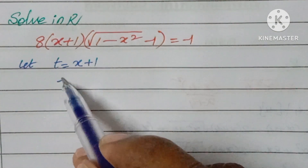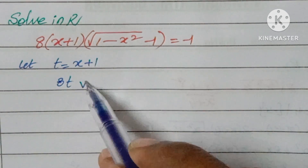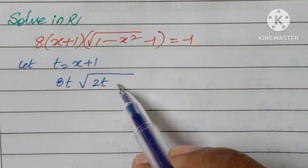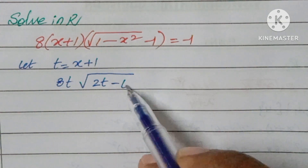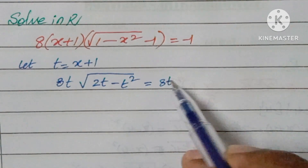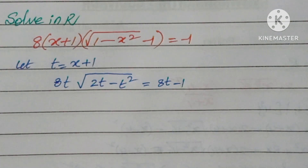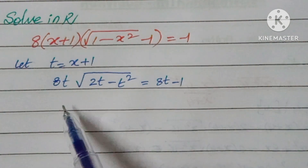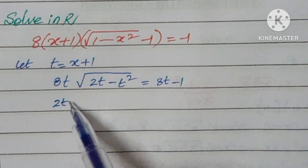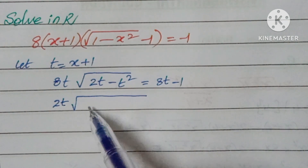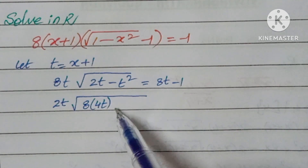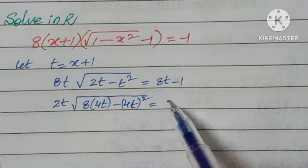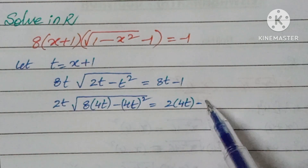We get 8 into t into square root of (2t minus t squared). Here we get 8t minus 1. Doing some adjustment: 2t into square root of 8 into (4t minus 4t squared), which is equal to 2 into (4t minus 1).